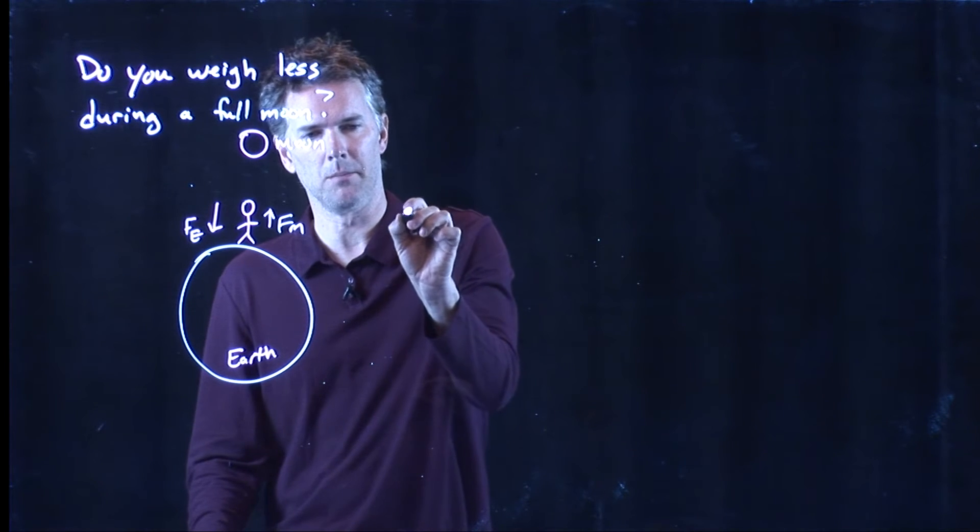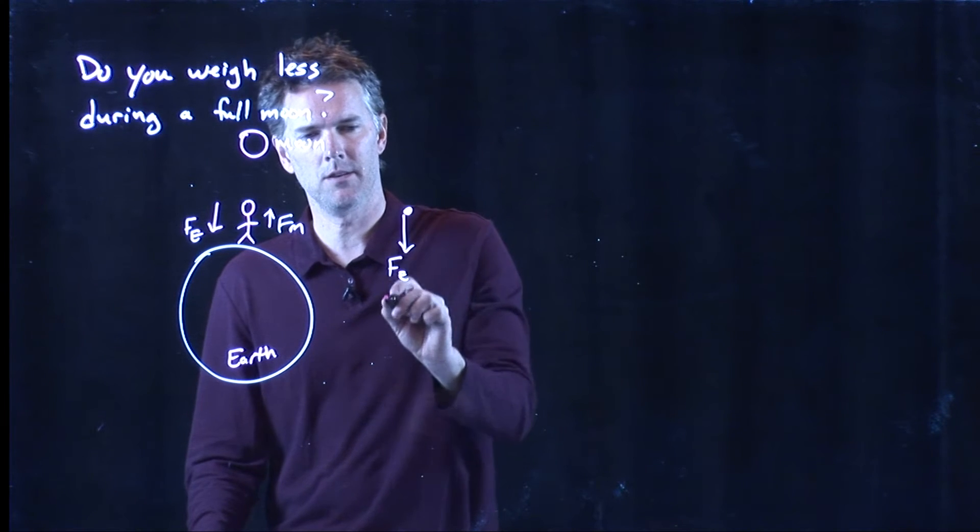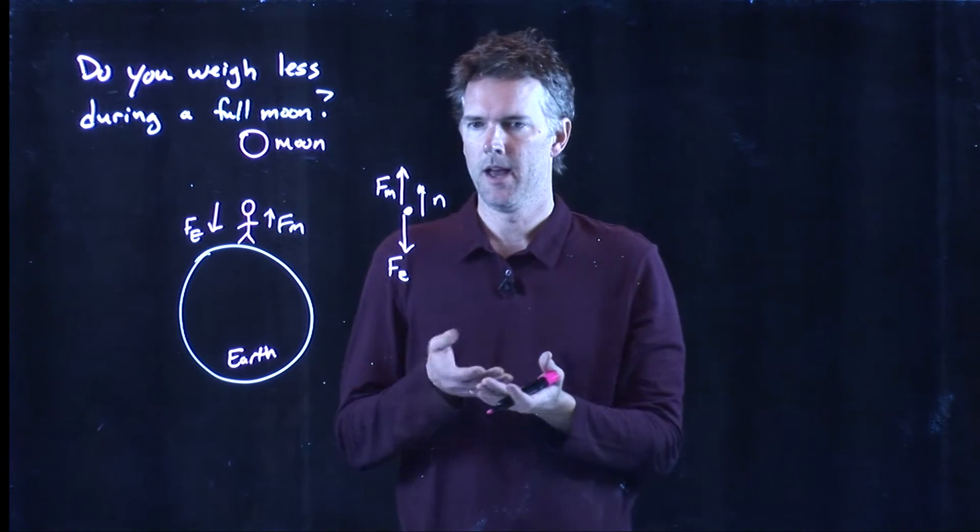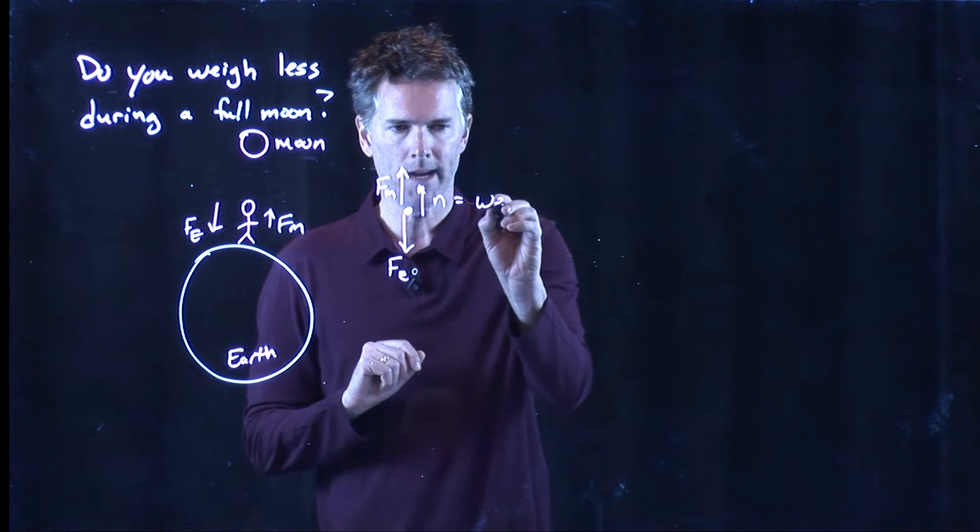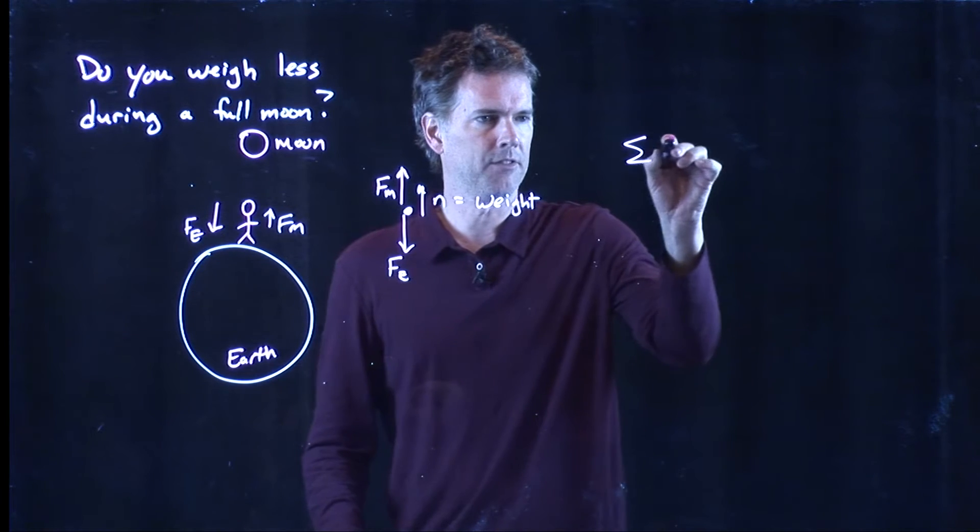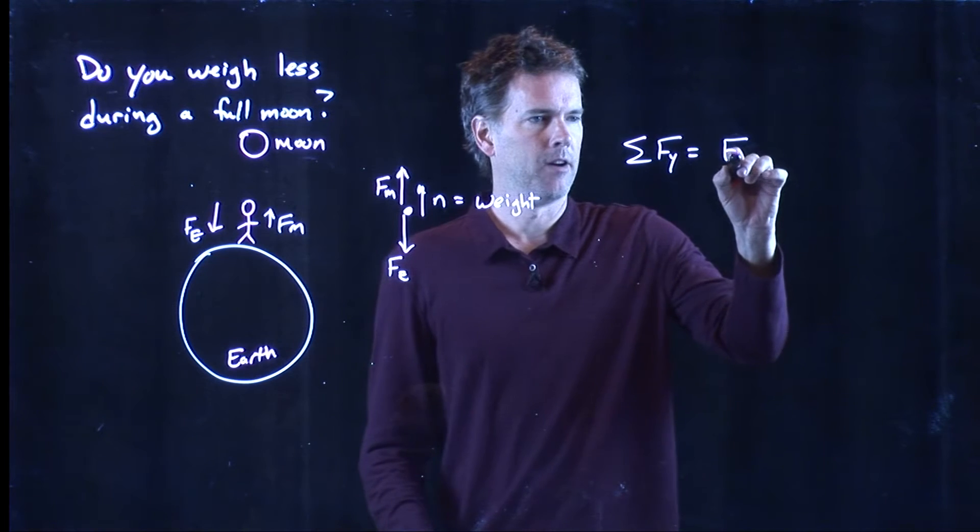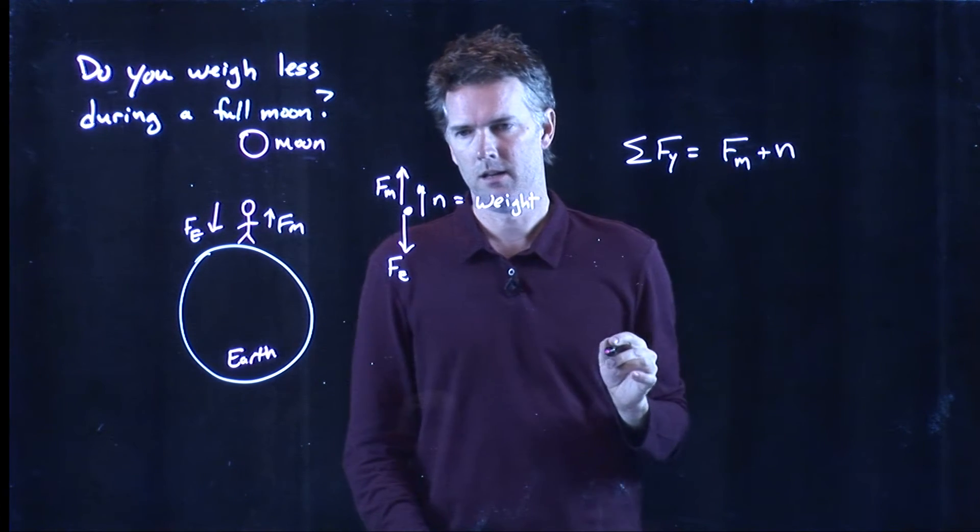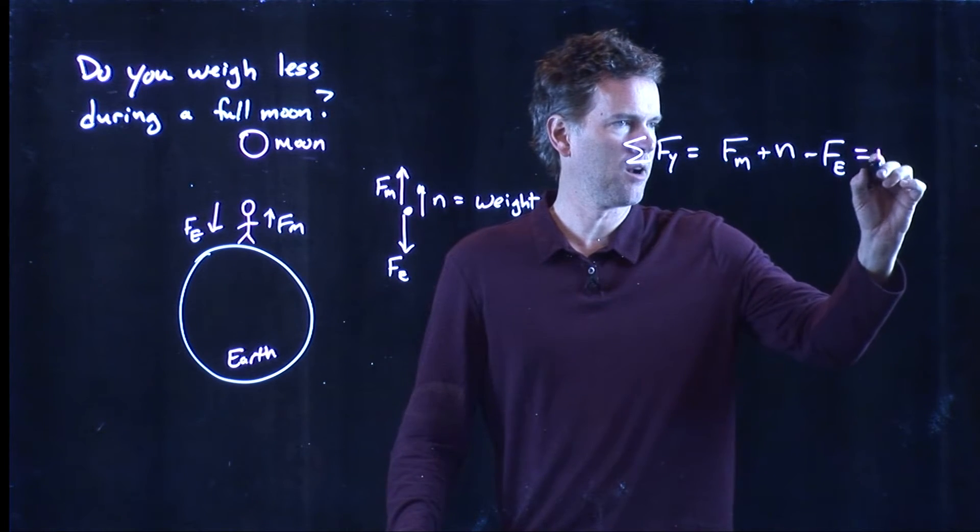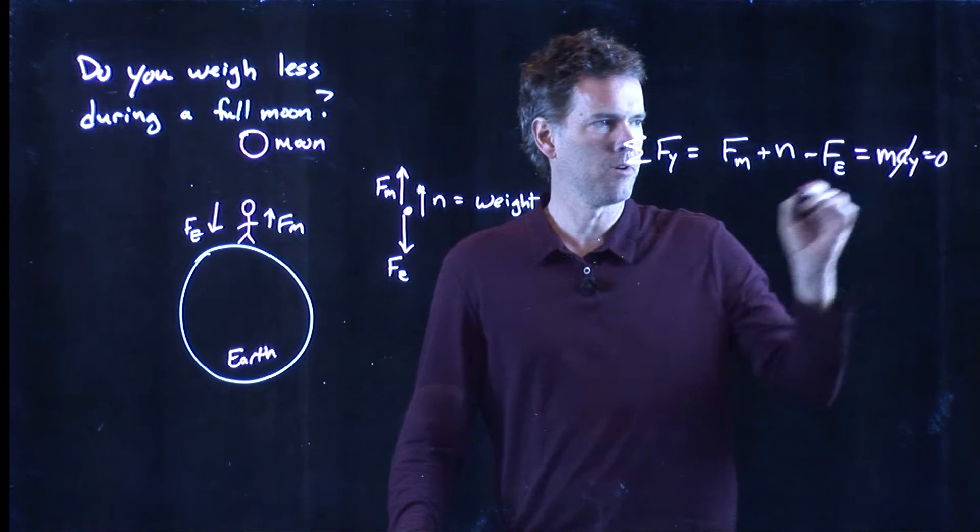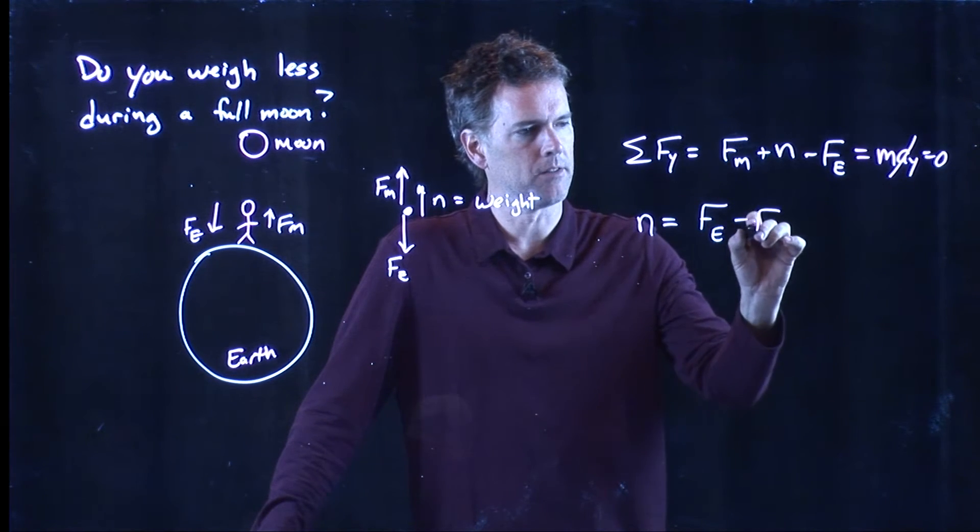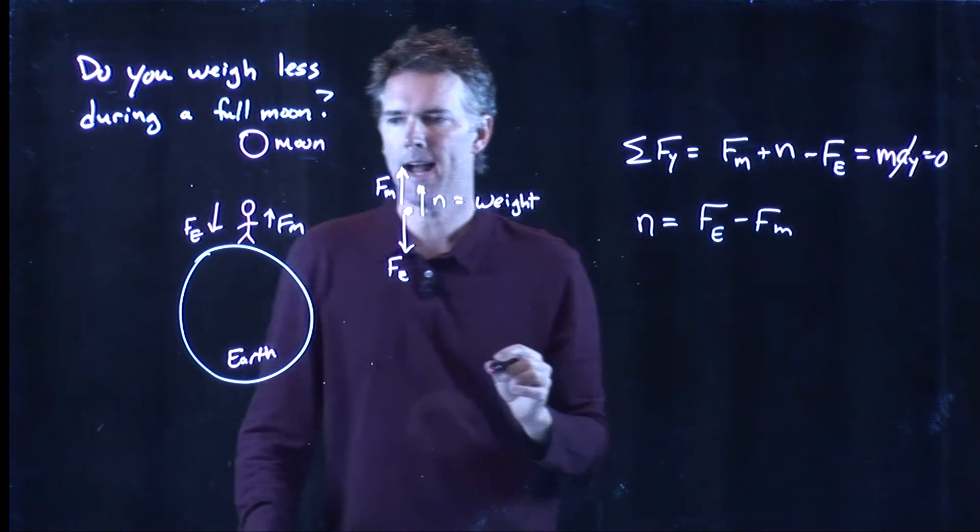The earth is pulling down on me, but the moon is pulling up on me. Let's see if we can calculate this picture now. All right. So I have a few things that are acting on me. I have the force of the earth pulling down. I have the force of the moon pulling up. And I also have the normal force N of the ground pushing up on me. And that normal force N is what we call our weight. How hard is the ground or the scale underneath me pushing up on me? Okay. So we've got sum of the forces in the y direction. What do we have? We have F of the moon going up. We have N of the normal force going up. We have the force of the earth pulling us down. If we're standing there without accelerating, then this is equal to zero. And so now we can solve this for N. N is just going to be FE minus FM. And we know exactly what those things are.